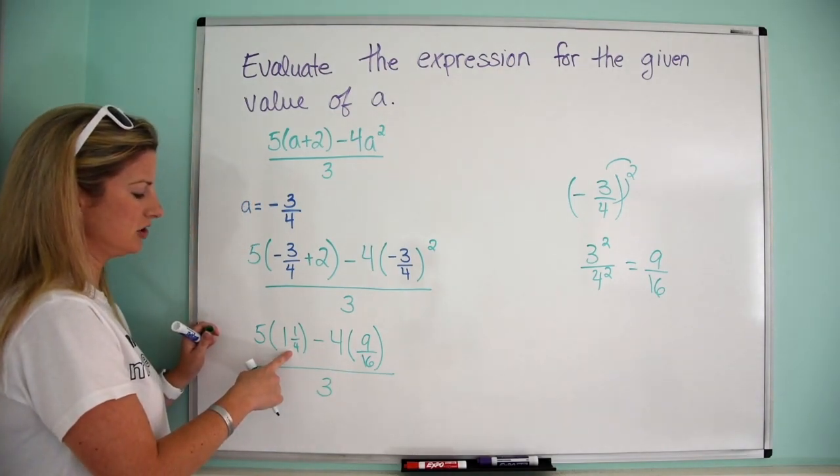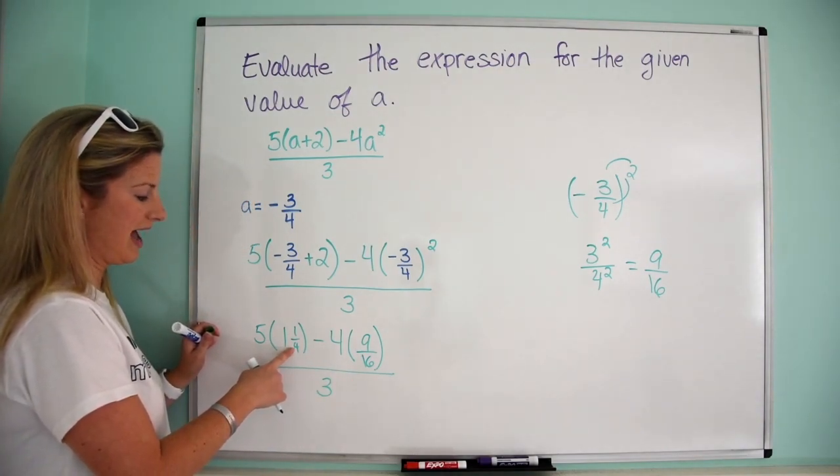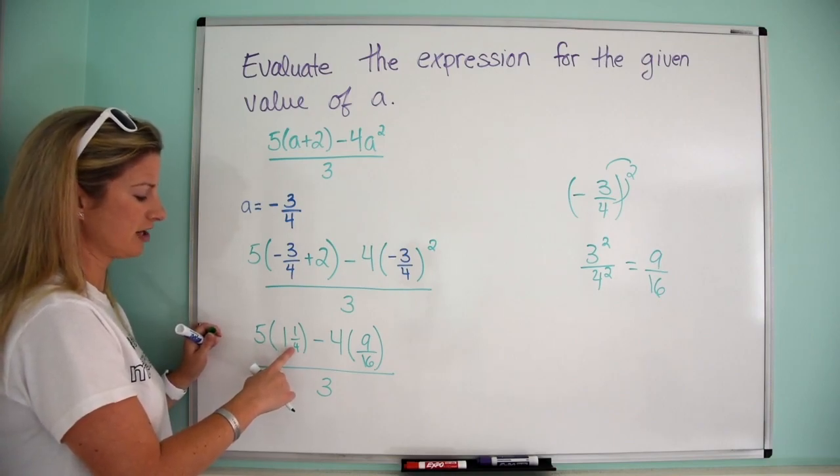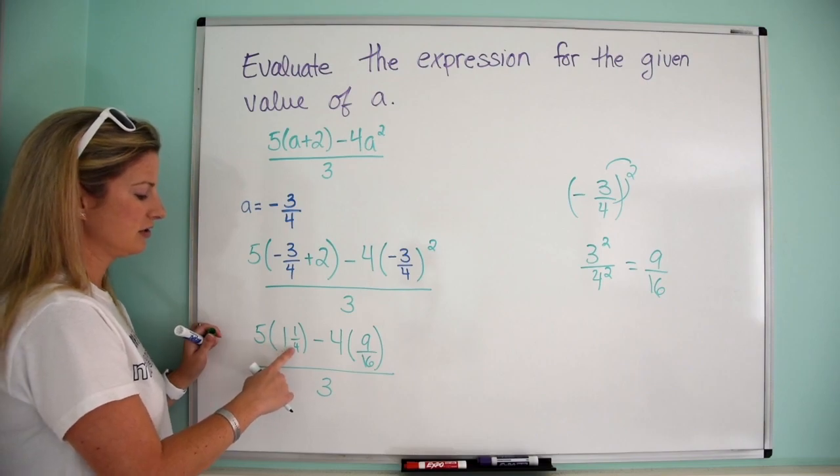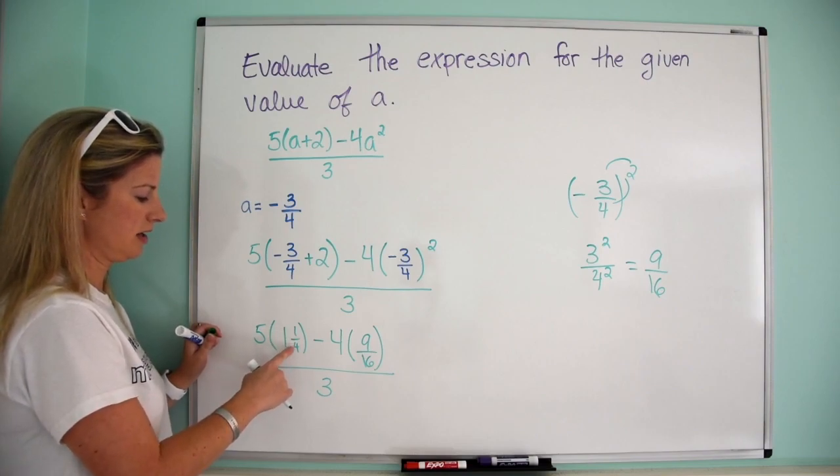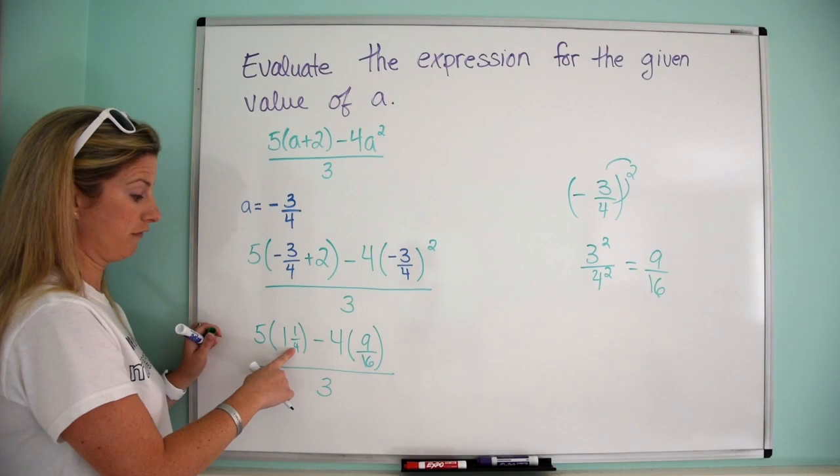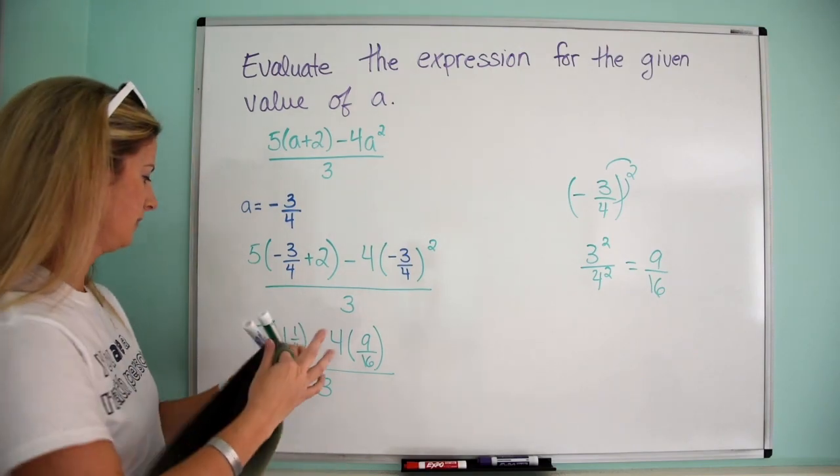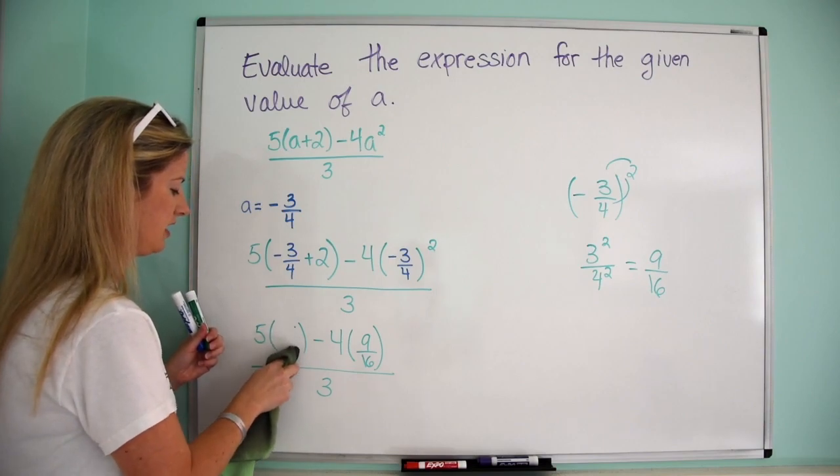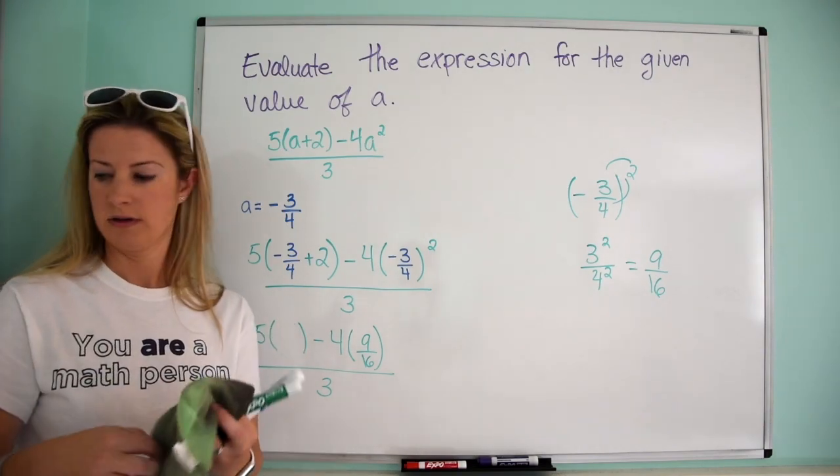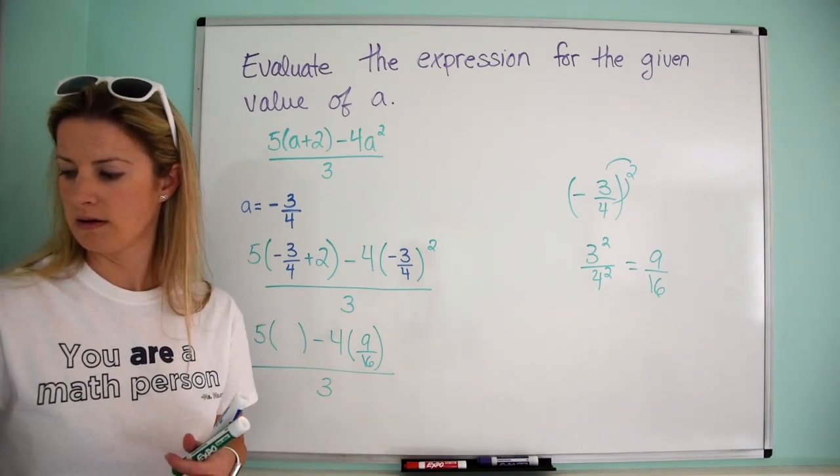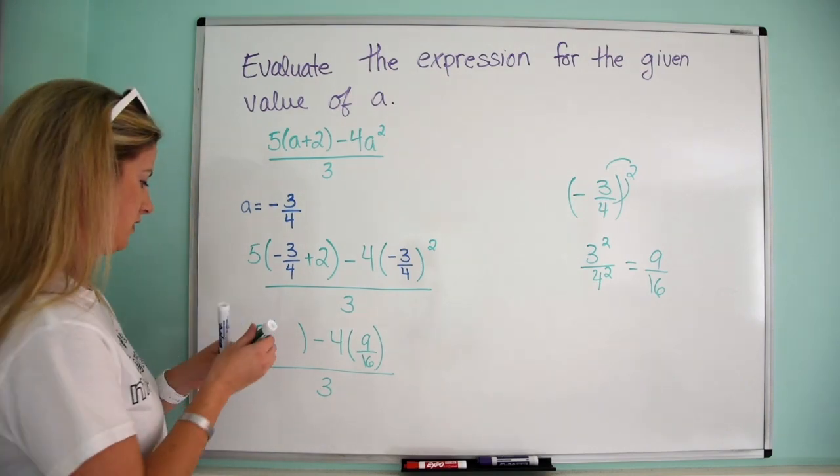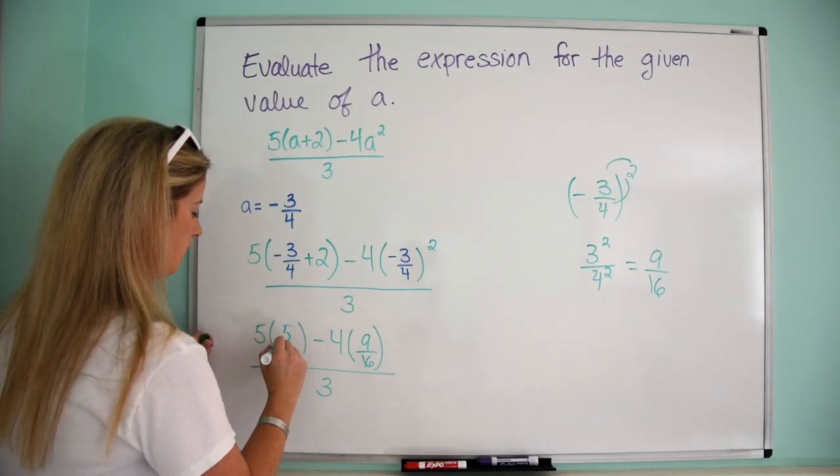Now, what we can do is we can write this as an improper fraction. So remember, when converting to an improper fraction, it's just this times this plus this, so 4 times 1 plus 1 is 5, and then it's over 4, so I can even erase that and just write it as 5 over 4.